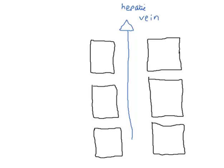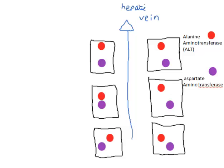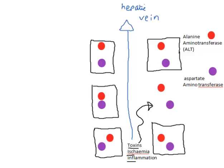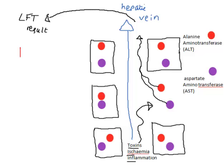Inside the hepatocytes, there are lots of enzymes involved in liver function. These include ALT, or alanine aminotransferase, and AST, or aspartate aminotransferase. Any number of stimuli can damage these hepatocytes. When this damage occurs, it causes death of the hepatocytes and release of the enzymes inside them into the hepatic circulation. This then reaches the systemic circulation to be measured in our blood test, giving an LFT result of a raised ALT and raised AST, due to damage to the hepatocytes.